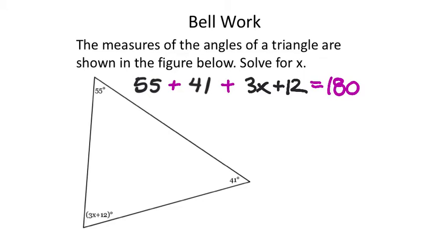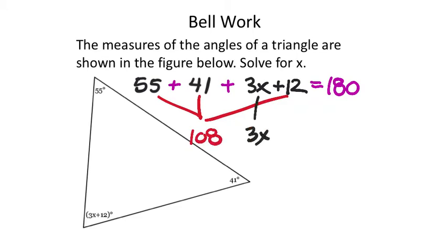I'm going to treat this like an equation, which will help me solve for x. In most equations we'd look for distribution first, which I don't see, so I'm going straight to combining like terms. I have constants 55, 41, and 12 — I'll just put that in my calculator. That gives me 108. We still have the 3x, which is positive, so 108 + 3x = 180. Now I have a two-step equation to solve.